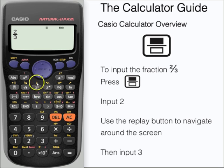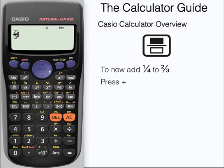Here we have our fraction displayed and we're going to use the replay button to move the cursor right so we're now in the center line because we're now going to add a quarter to our two-thirds.